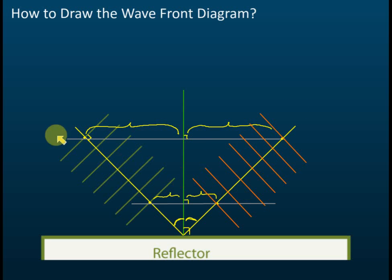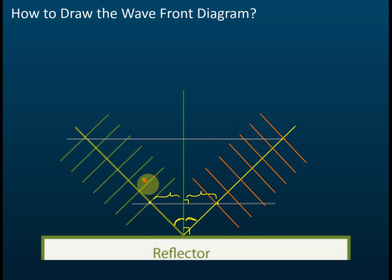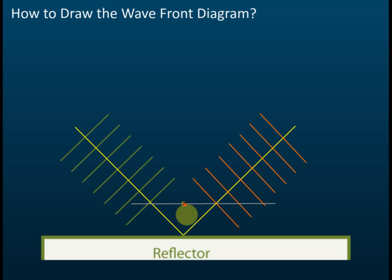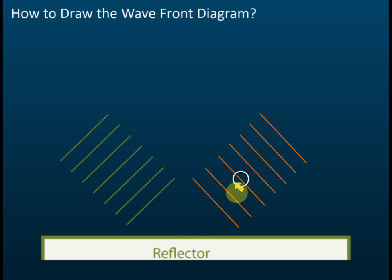After you have all your wavefronts drawn, you can erase the reference lines because they were only for reference. You don't need any of those construction lines in your final diagram. This gives you the reflected wavefronts. Remember: the angle of incidence must equal the angle of reflection, and the distance between wavefronts must be the same.